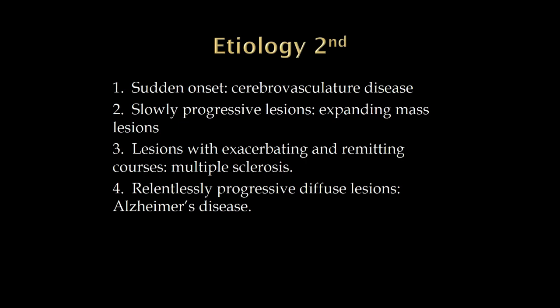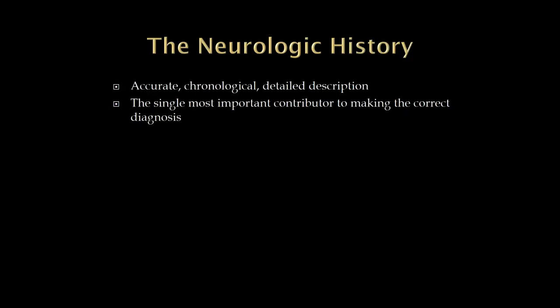Then we have conditions that seem to affect the whole brain and every few months the patient is just getting worse — global and diffuse. Neurodegenerative conditions fit this category. Alzheimer's would be the classic example — Alzheimer's is not just memory loss; the whole brain is affected. So we localize, and then we try to speculate on the etiology.